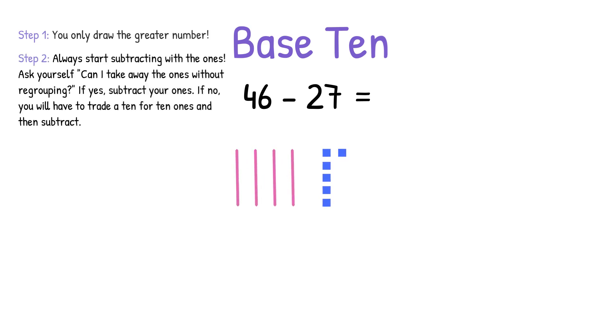Step two, always start subtracting with the 1s. Ask yourself, can I take away the 1s without regrouping? If yes, subtract your 1s. If no, you will have to trade a 10 for 10 1s and then subtract.